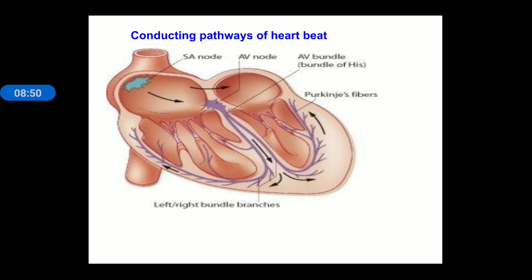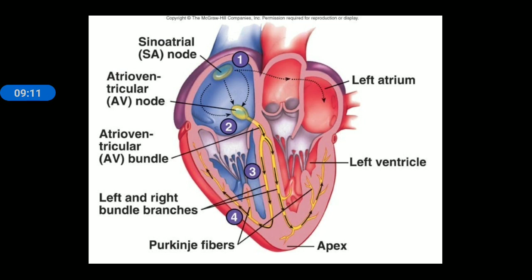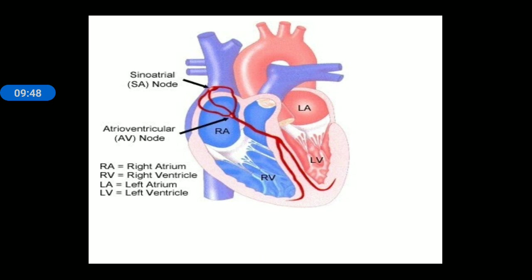The SA node generates the wave of contraction, so SA node is known as the pacemaker — it maintains the pace of our heartbeat. The AV node receives this wave, so the AV node is known as the pace setter. You can see in the diagram the four chambers of the heart, with shaded arrows showing the wave going through the atria, and black arrows showing the Bundle of His spreading the wave into the ventricles.